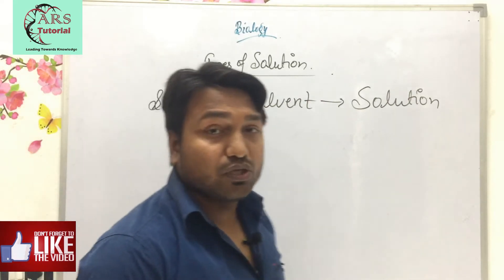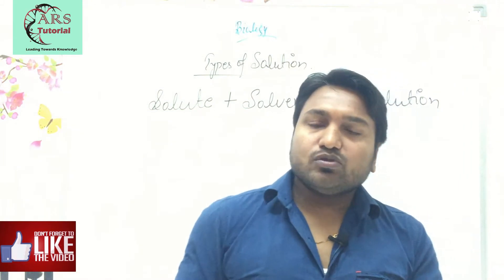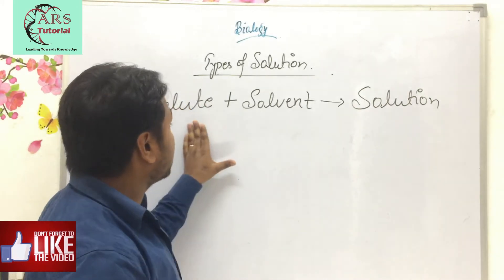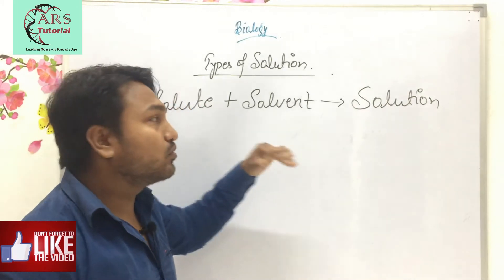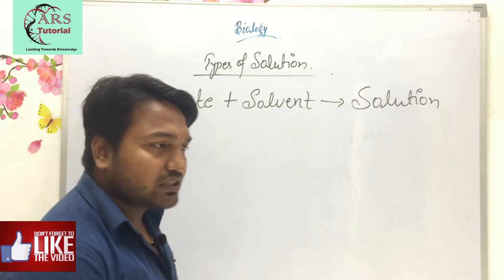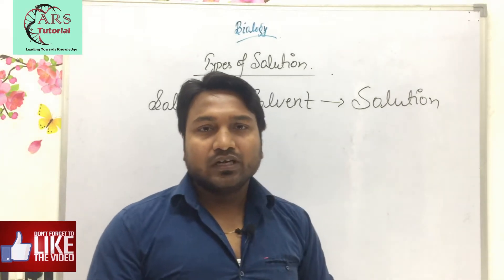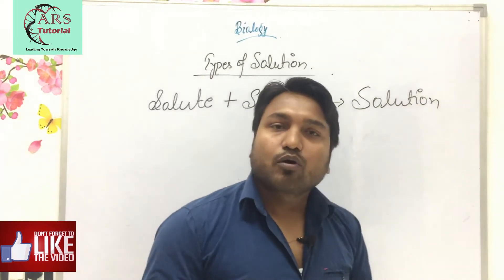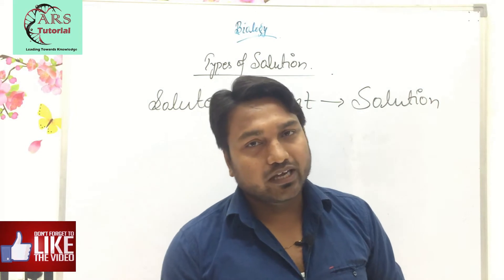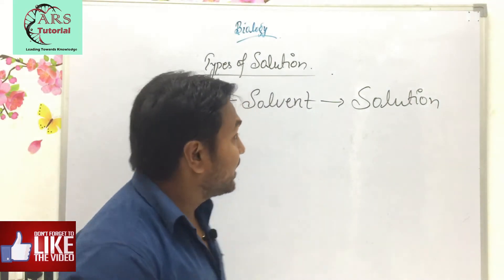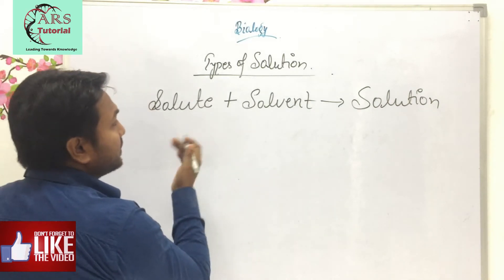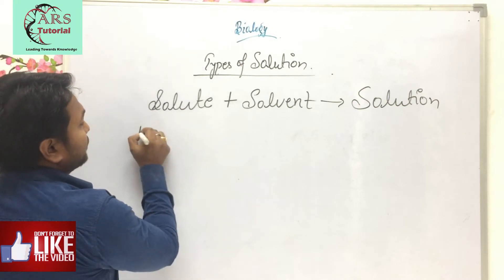We are going to learn the types of solutions. To understand the types, we can use a probability approach — like flipping a coin, where you get either heads or tails. Similarly, for any solution, there are three possible conditions based on solute and solvent concentration.